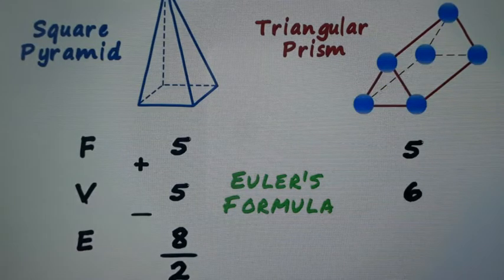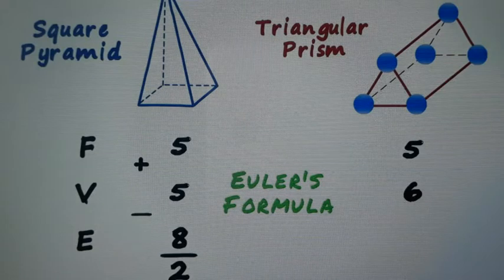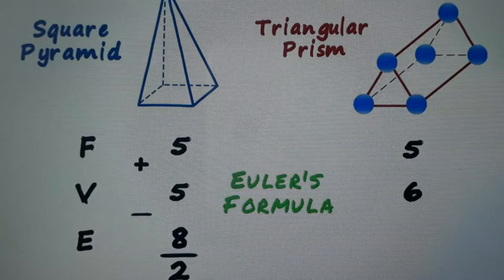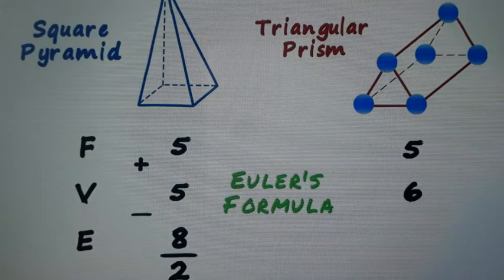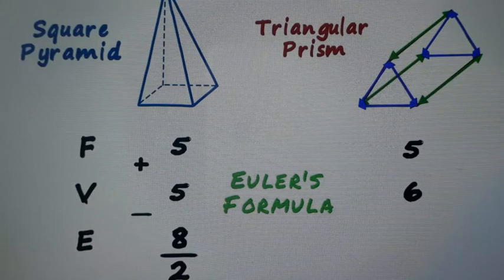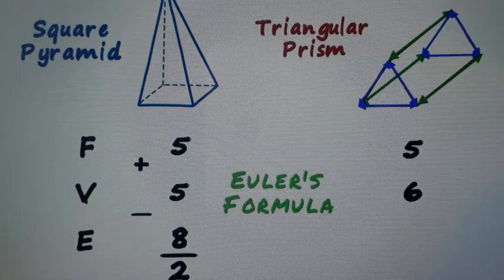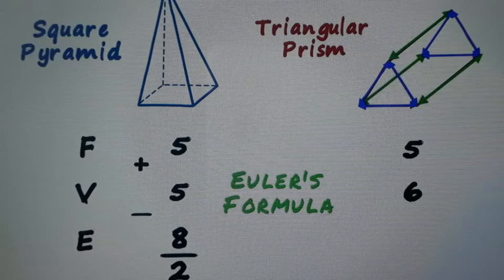Now we are left with edges only, so we can calculate with the help of Euler formula. It should be 9 because 6 + 5 = 11, 11 - 2 = 9. Let us count it practically. See, these arrows are representing edges: one, two, three, four, five, six, seven, eight, nine. So nine edges. Again, 6 + 5 - 9 = 2.